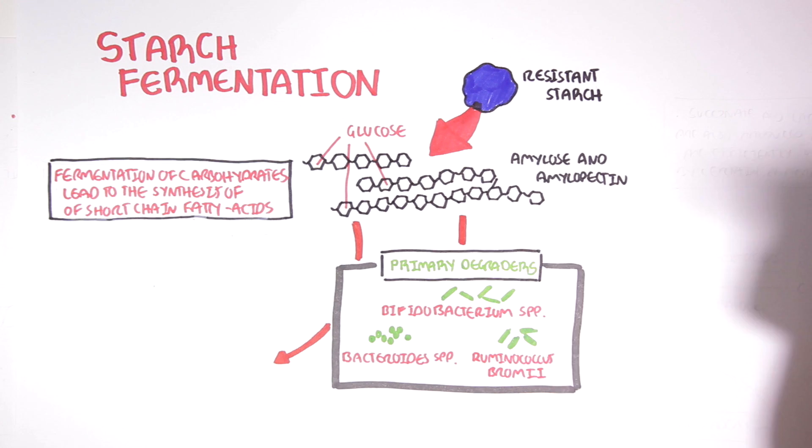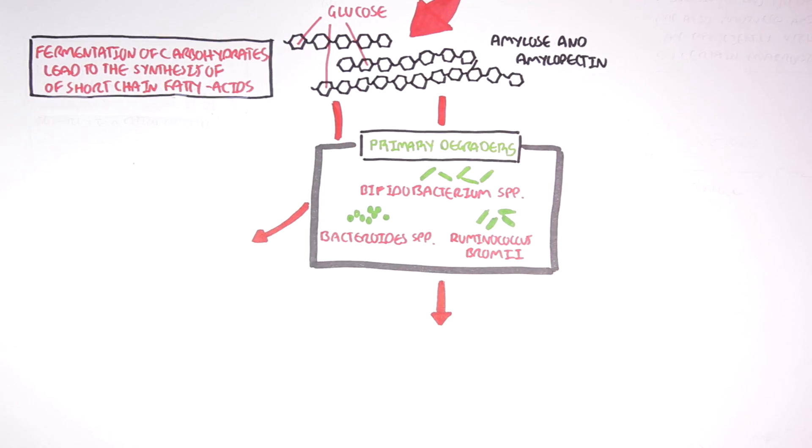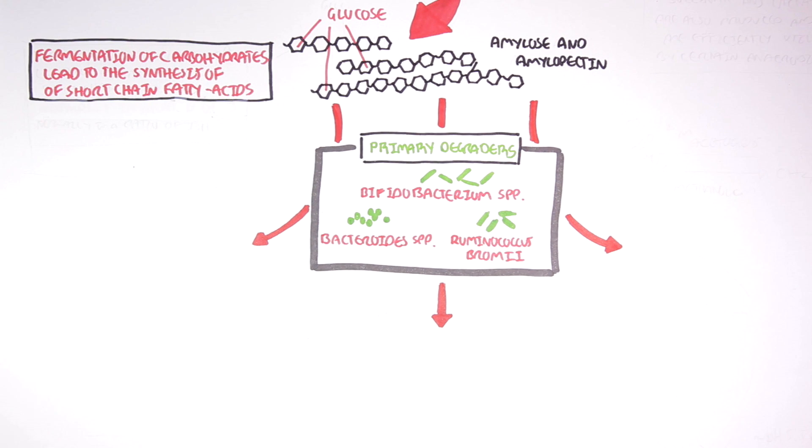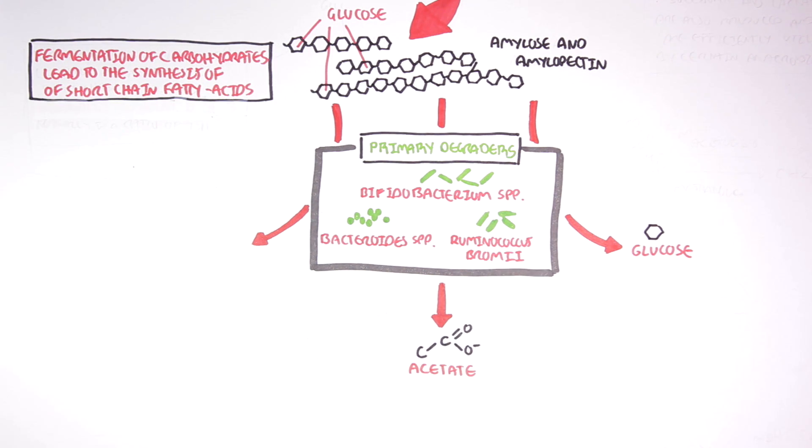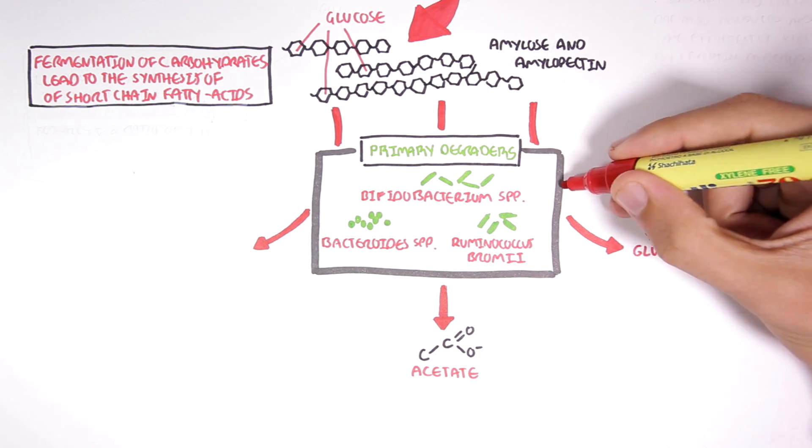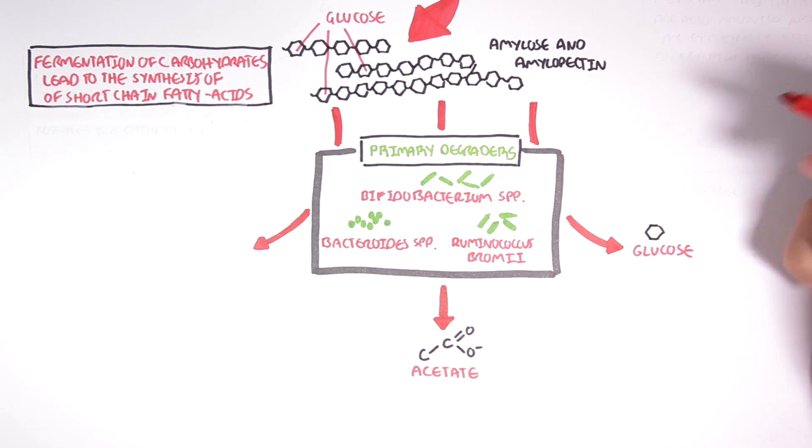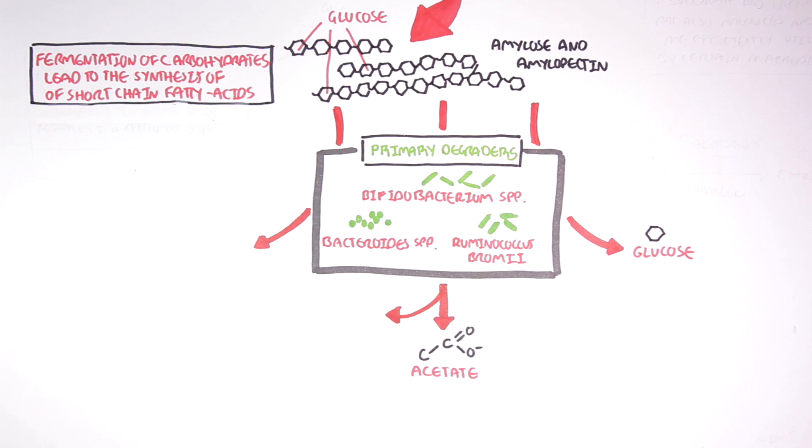Many products are produced through the fermentation of resistant starch by the primary degraders. Glucose can be released thanks to membrane-bound enzymes that cleave off glucose polymers. Through fermentation of glucose, these primary degraders can produce the two-carbon short-chain fatty acid, acetate, and release formate in the process.